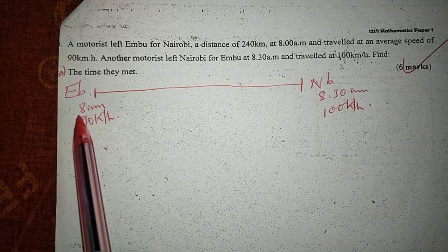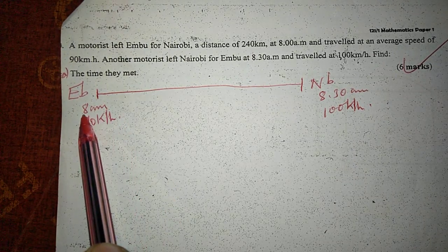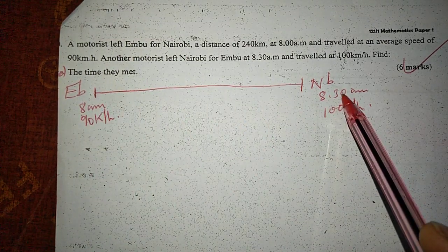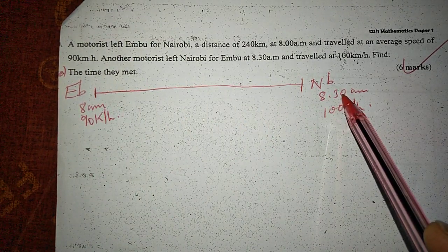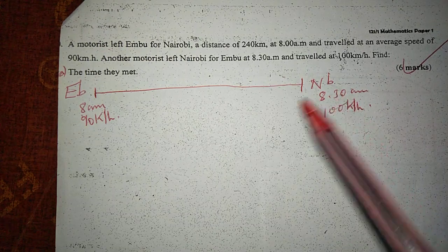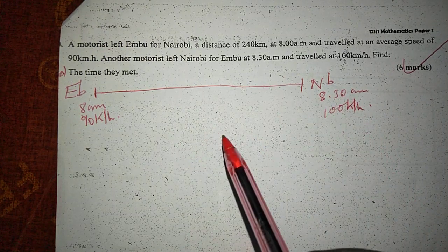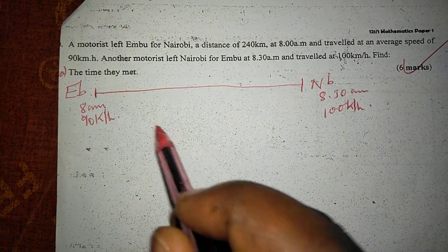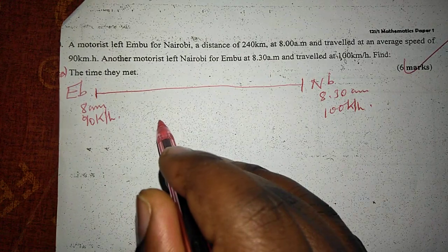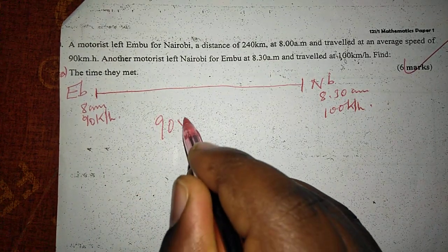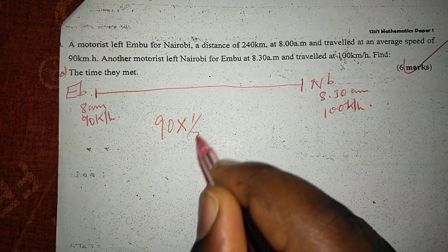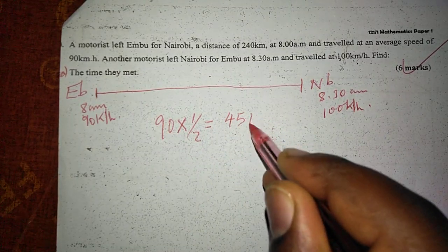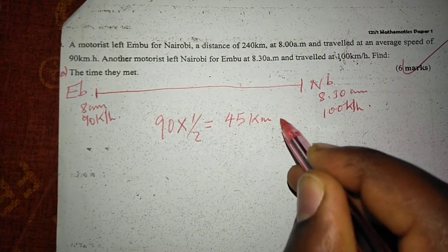If the first motorist started his journey at 8 exactly and the other one at 8:30, it means before the second motorist started traveling, the first motorist had traveled for 30 minutes, which is half an hour. Because the first motorist is traveling at 90 kilometers per hour and has covered half an hour, he has already traveled 45 kilometers.